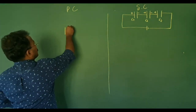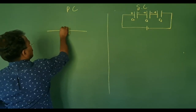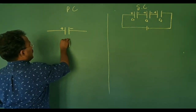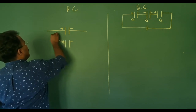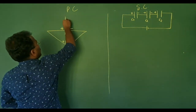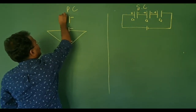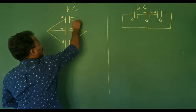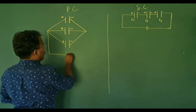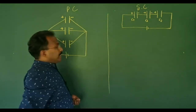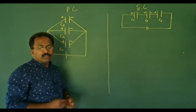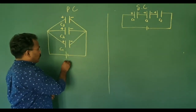Now for the parallel combination. We have a capacitor here that is positive and negative. We have two capacitors, then three capacitors — C1, C2, C3 — all connected side by side. This is the common battery and this is the potential difference V applied across them.